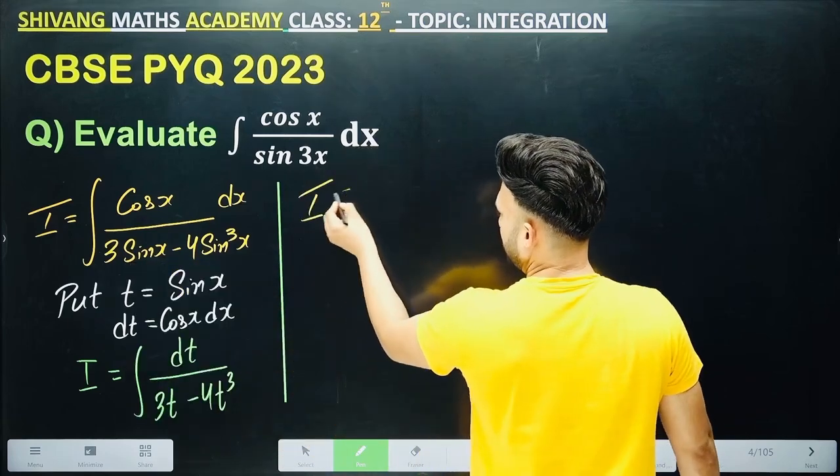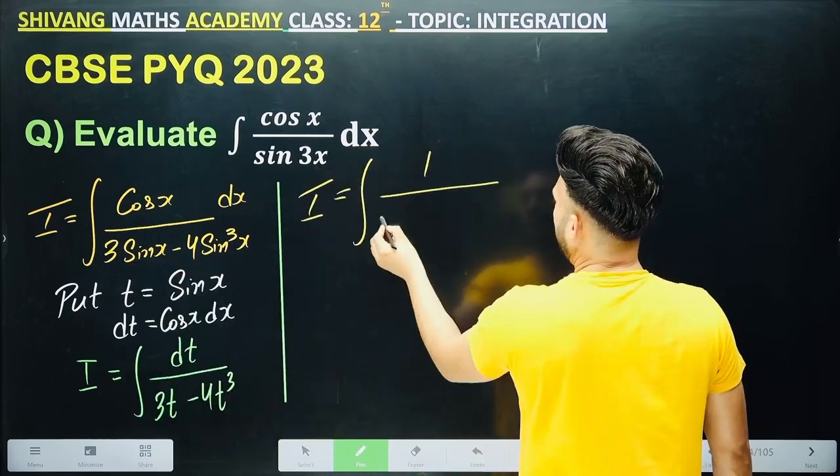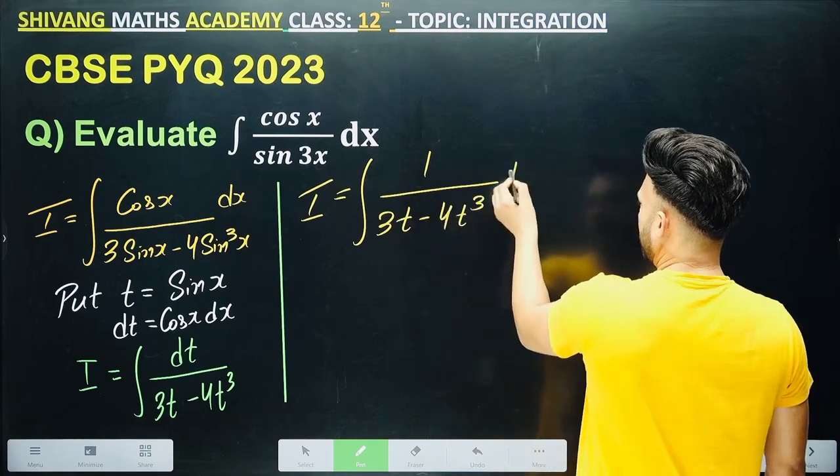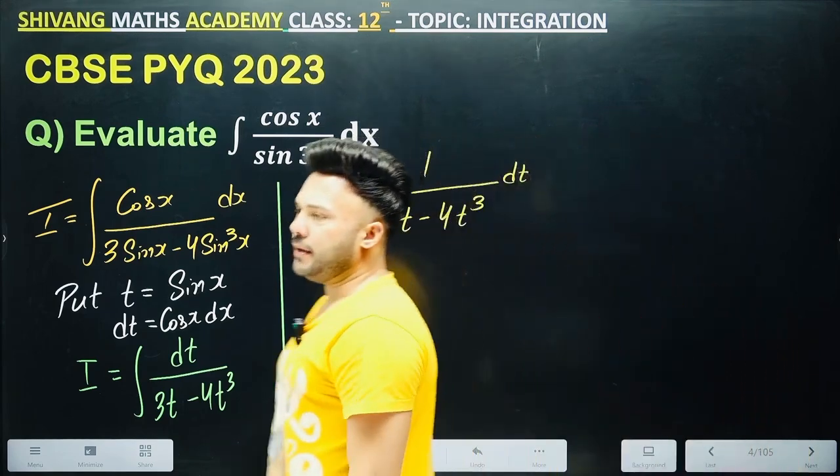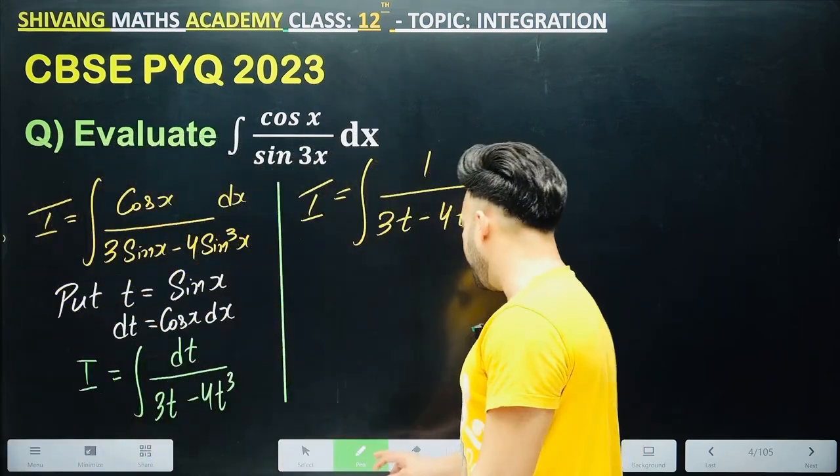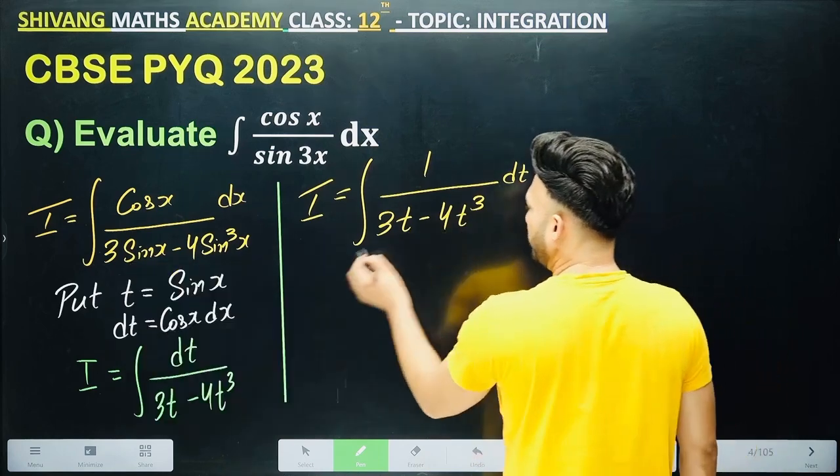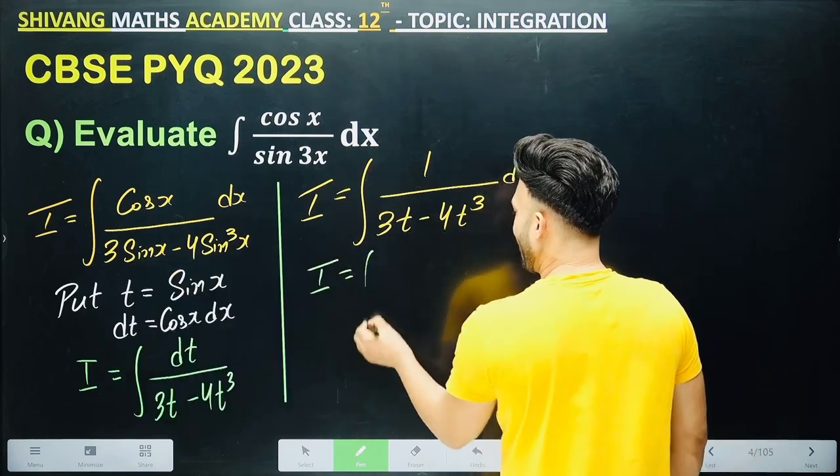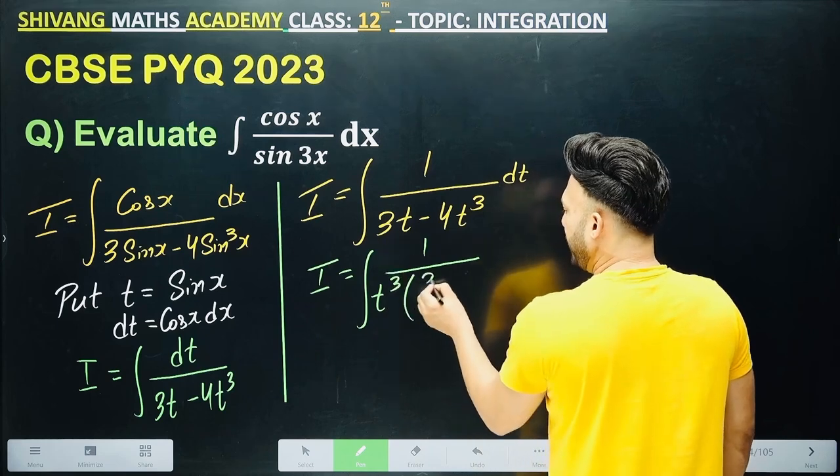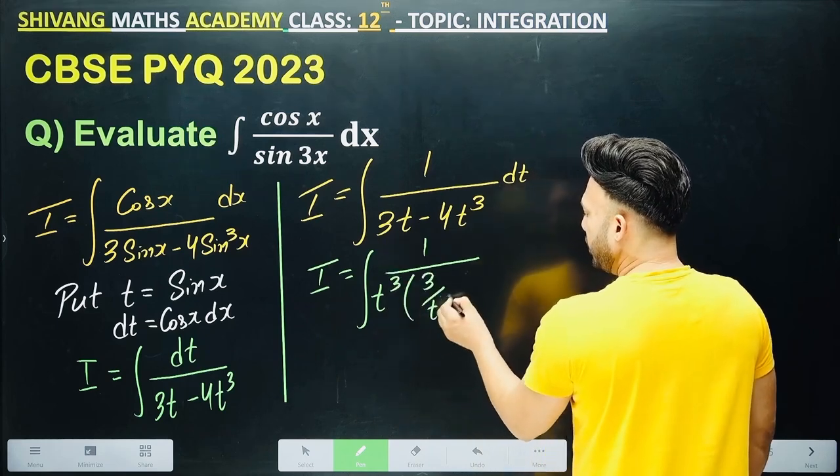It is done. Look, one way is that you can do it with partial fraction also by taking out the common t. But that length is less. Do you know a better way than that? What do you do? Take out the common t from here. Take out the common t between these two. Here 3t squared will remain and here 4 will remain.